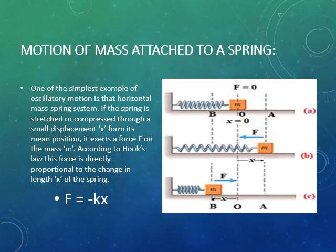Motion of mass attached to a spring is the best example of simple harmonic motion. Consider a mass attached at one end of the spring while the other end is fixed with a rigid body. The mass is placed on a horizontal frictionless plane so that its weight and the normal force of the plane are equal and opposite, canceling each other. Now if the spring is stretched or compressed to a small distance x from its mean position, as shown in figures b and c, it exerts a force F on the mass m. According to Hooke's law, this force is F = −kx.